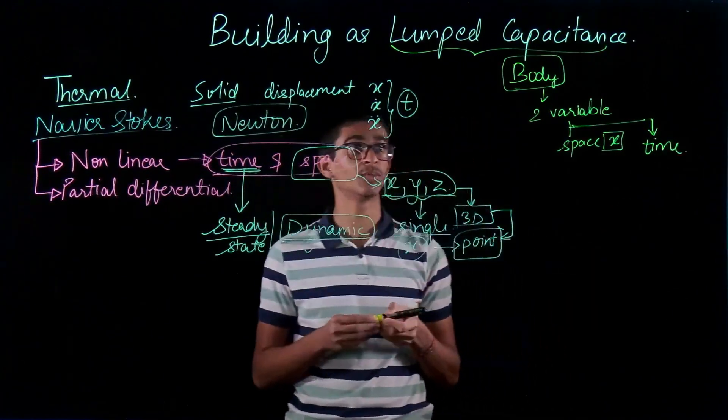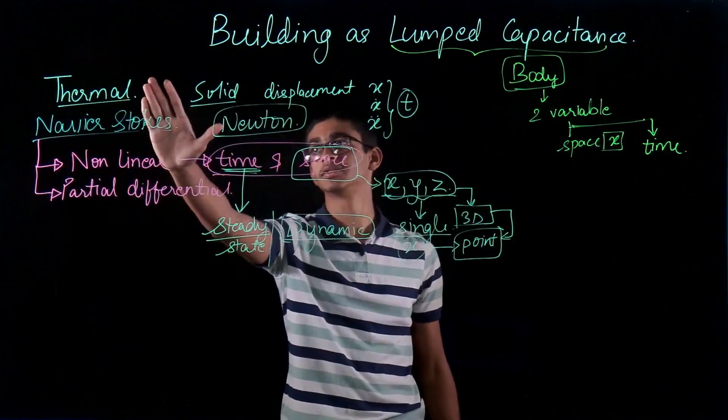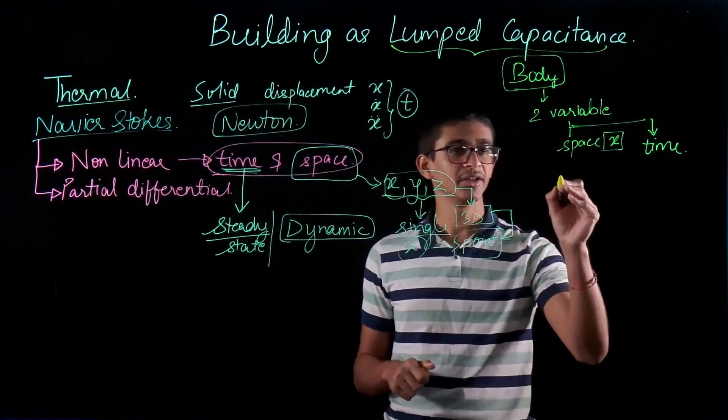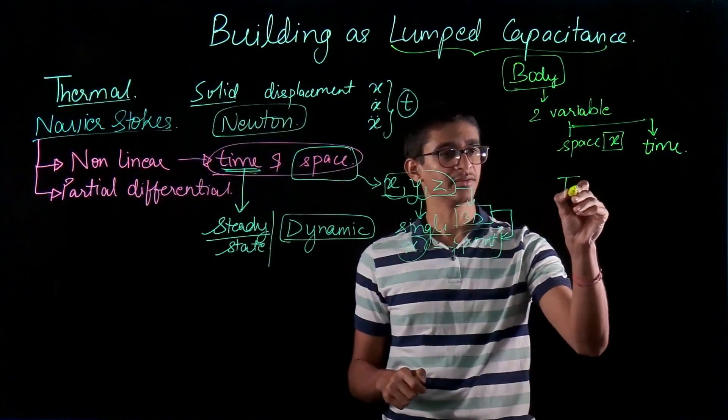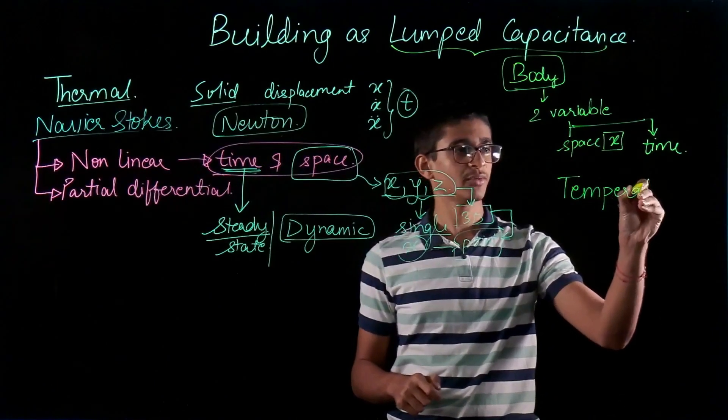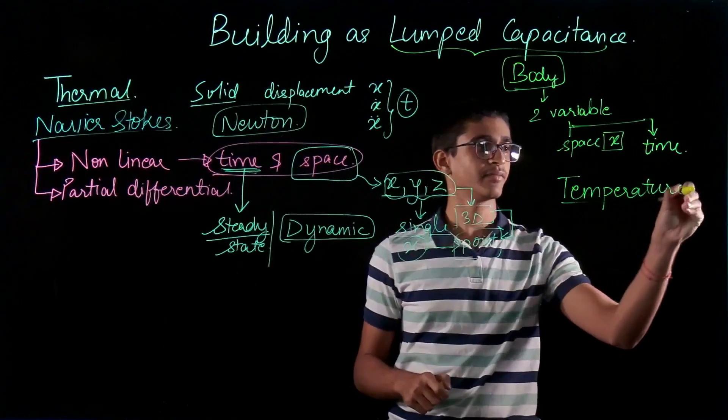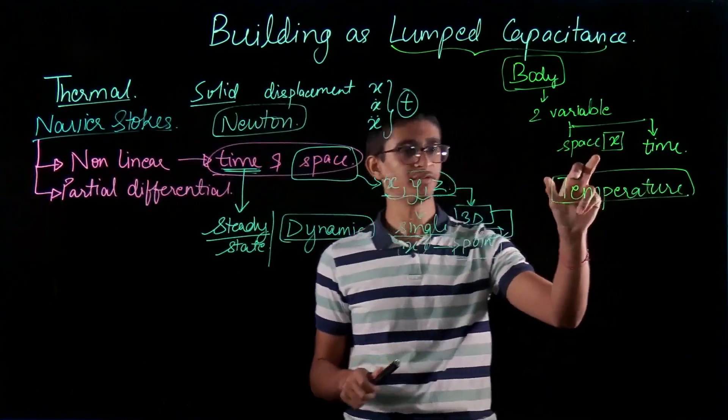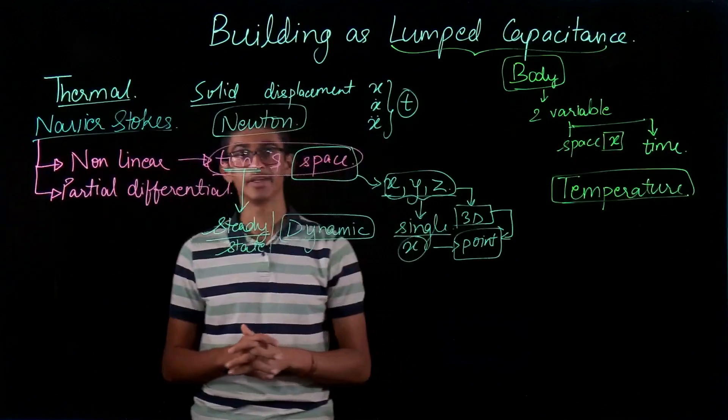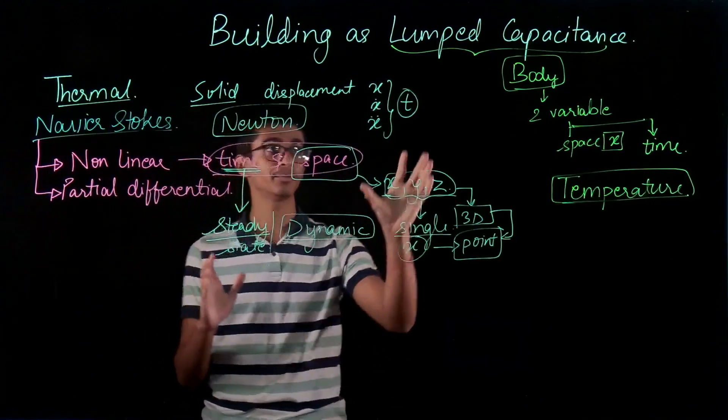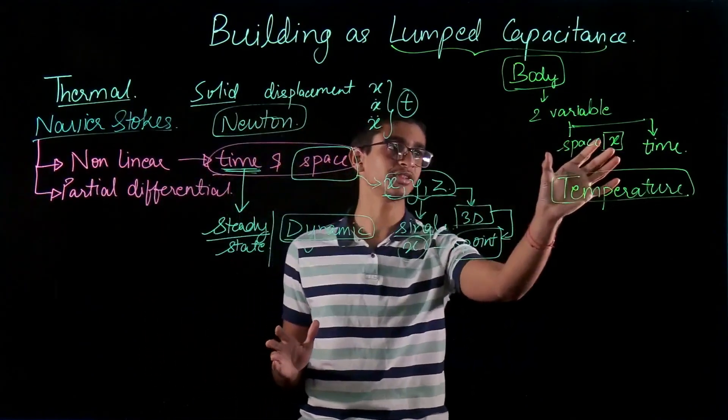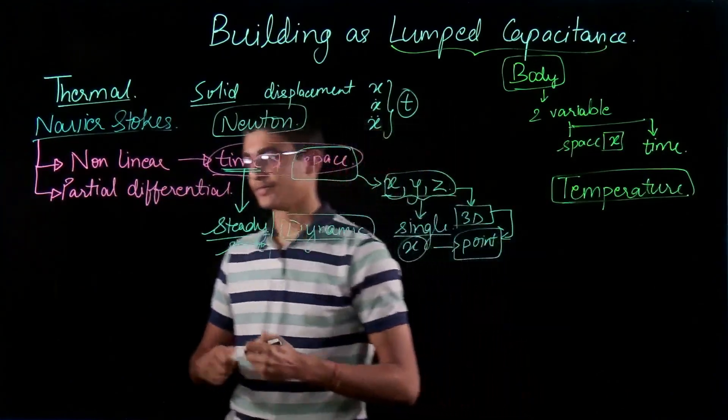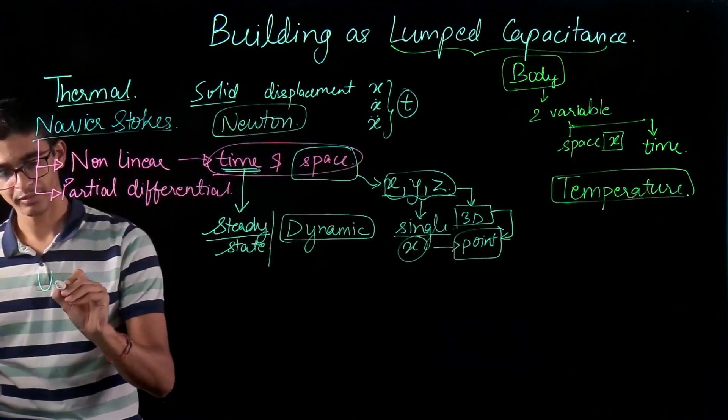So the temperature of the body when we solve the thermodynamics problem, what we are interested in is the temperature. So the temperature of the body can change with time and it can change with location. At all places inside my lump mass, all locations will have the same temperature. So the temperature has uniformity.